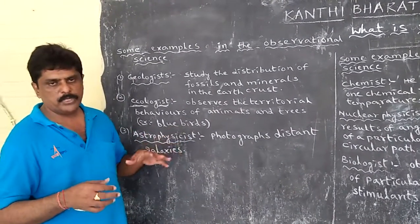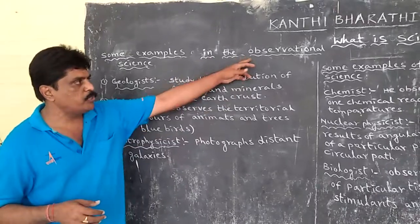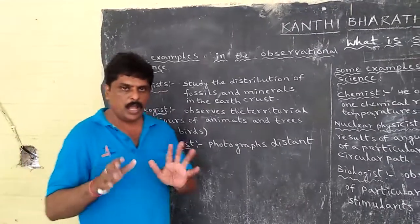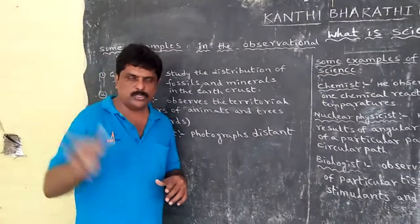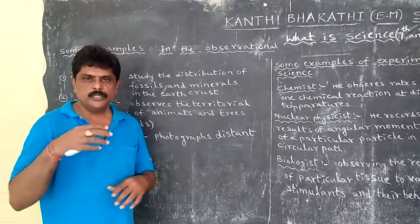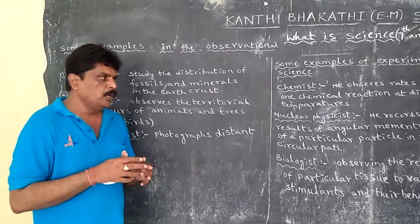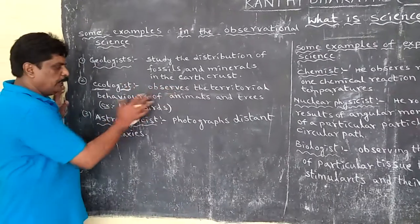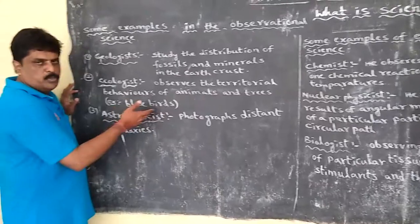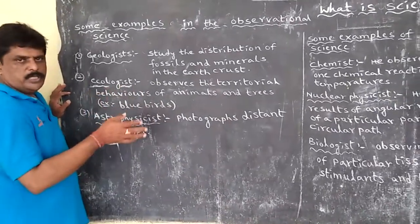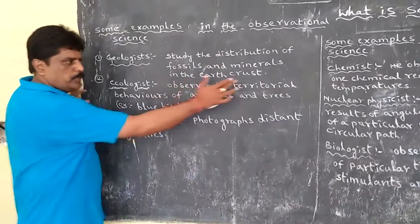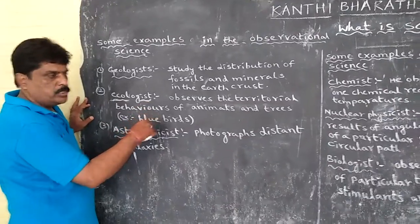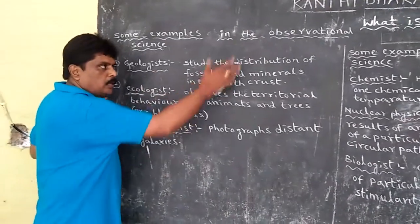The second example is ecology. What is the meaning of ecology? Those who study ecology are called ecologists. Ecologists observe the territorial behaviours of animals and trees — for example, mammals and birds. They are also in the category of observational science.